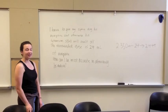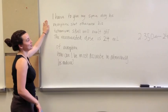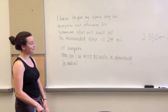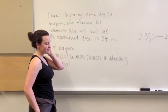In this problem, I have to give my space dog his morphine shot. Otherwise, his tetranium skull will melt off. The recommended dose is 2.4 millimeters of morphine. How can I be most accurate in administering this medicine? So, in this case, we have to worry about measuring it to the tenth range.